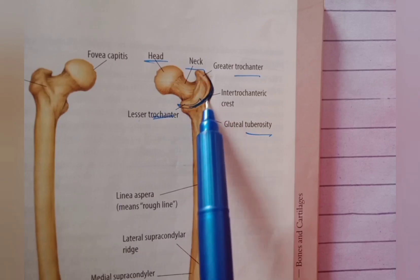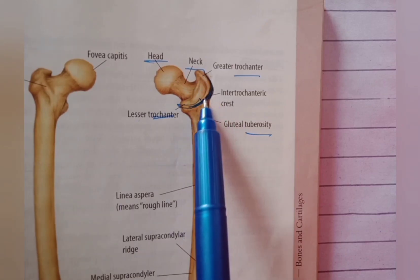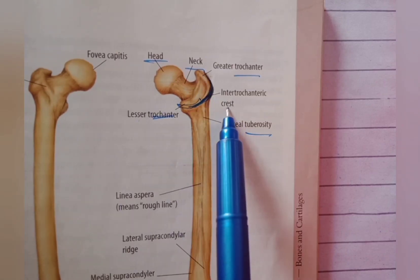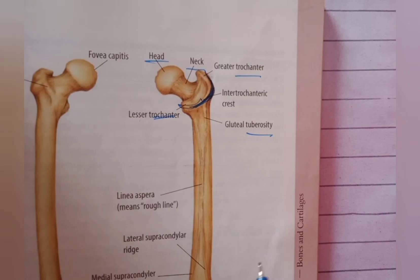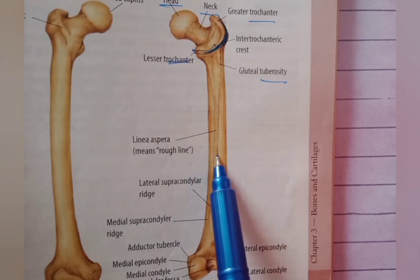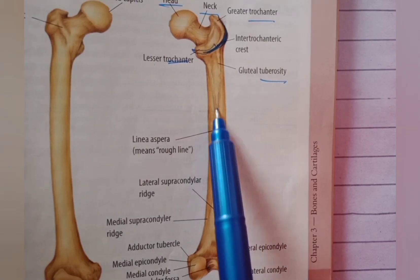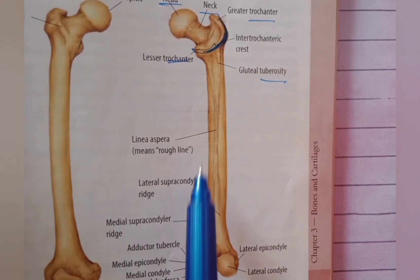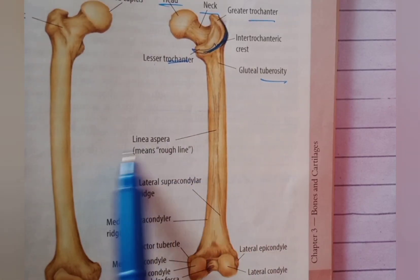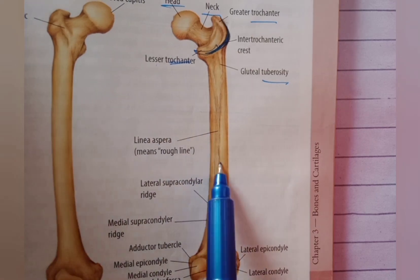Next, crest — this is a prominent ridge. For example in the femur, you can see an intertrochanteric crest. A line is a less prominent ridge on a bone; for example in the femur, this line is a rough line.